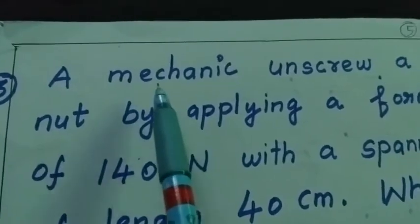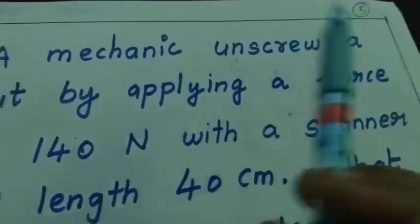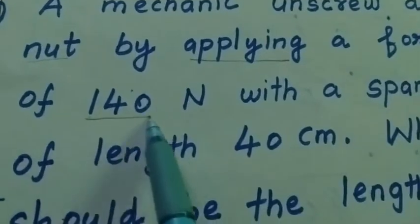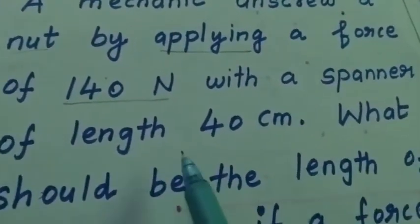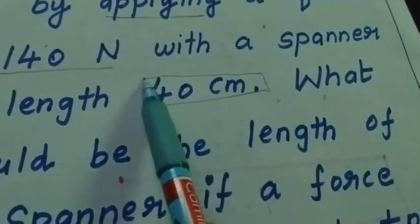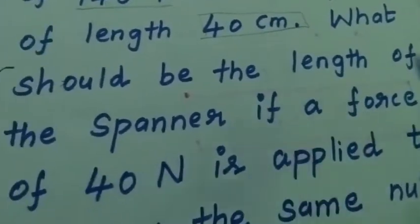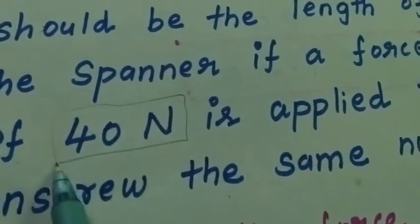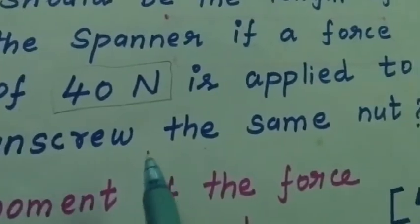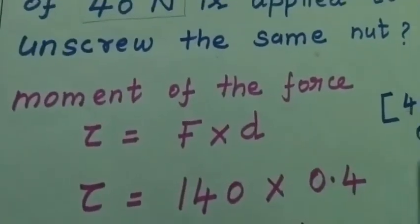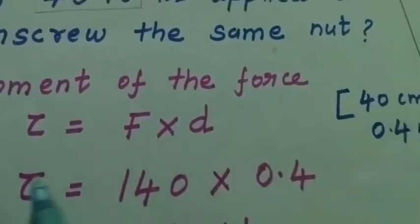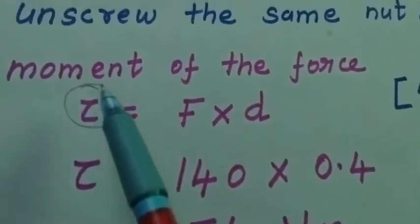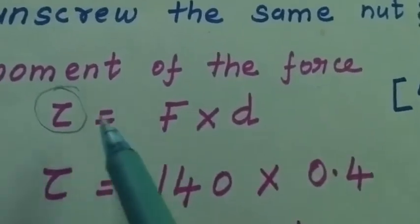Question number three: a mechanic unscrews a nut by applying a force of 140 newton with a spanner of length 40 centimeter. What could be the length of the spanner if a force of 40 newton is applied to unscrew the same nut? Moment of the force: tau equal to force into distance. Here tau symbol stands for torque, so torque tau is given as f into d.